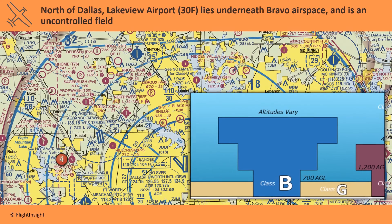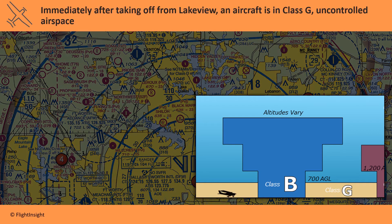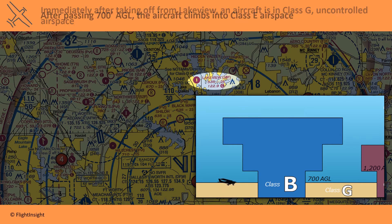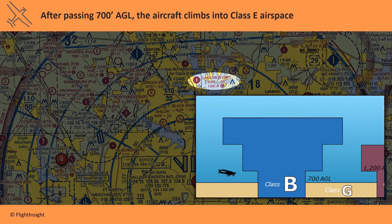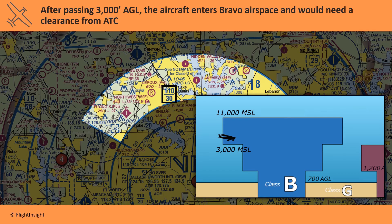Let's look at Lakeview Airport again near Dallas. It's an uncontrolled airport. It's Class G airspace from the ground up to 700 feet AGL. Once the aircraft climbs above 700 AGL, it's in Class E airspace. If it climbs further, it'll hit the base of DFW's Class Bravo airspace at 3,000 MSL and will need an ATC clearance to enter.